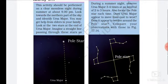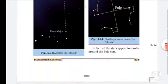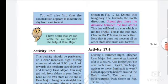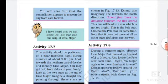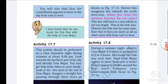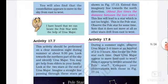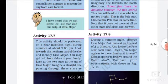Imagine a straight line passing through these stars as shown in Figure 17.3. Extend this imaginary line towards the north direction. This line will lead to a star which is not too bright—this is the Pole Star. Observe the Pole Star for some time. Note that it does not move at all as other stars drift from east to west.